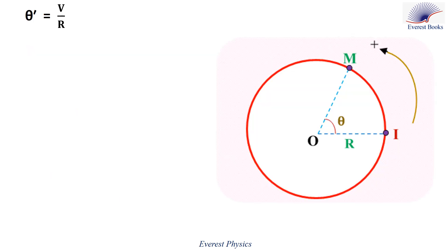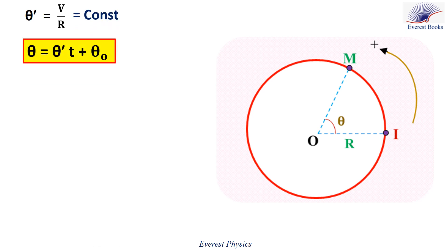Consider a particle M moving on a circular path. We want to determine the time equation and the period of its motion. We know that theta prime equals V over R, but the speed is constant because the motion is uniform. Then theta prime is constant. Therefore, theta equals theta prime times T plus theta zero.